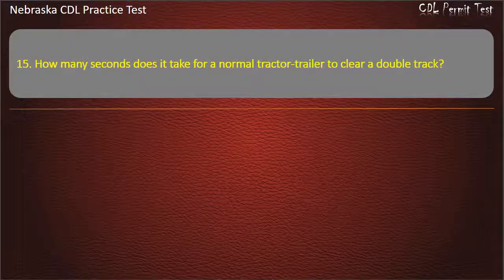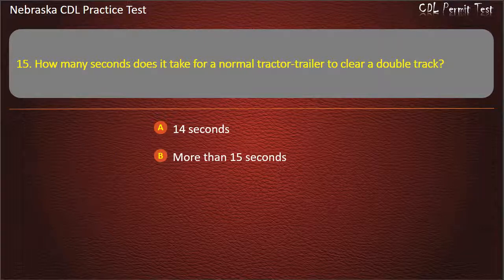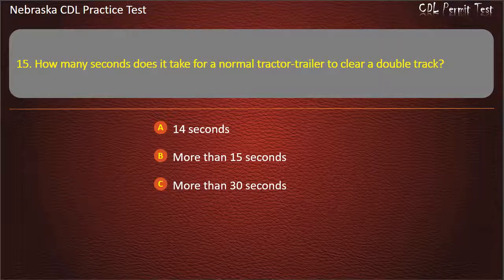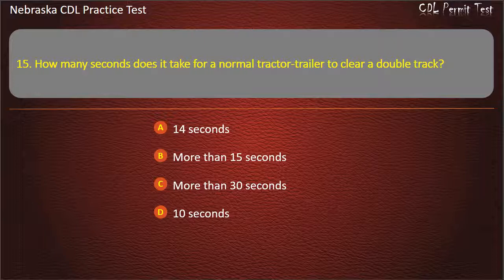Question 15. How many seconds does it take for a normal tractor trailer to clear a double track? 14 seconds, more than 15 seconds, more than 30 seconds, 10 seconds. Answer: More than 15 seconds.